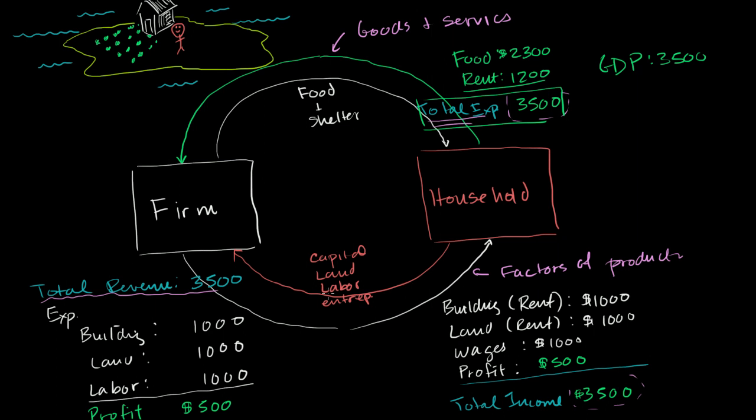And he essentially leased out all of the factors of production to that firm, including his own labor. The rent on his labor is essentially his wages. And then he bought all of the goods and services he needed from that same firm. So his expenditures would be the revenue of that firm. And then the revenue of that firm would be turned into the expenses and the profit of the firm. So whatever the revenue wasn't used in expenses ended up being profit.